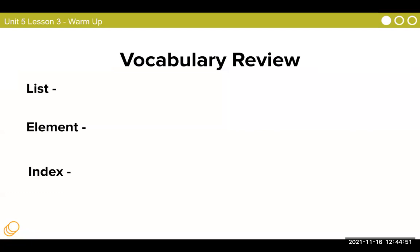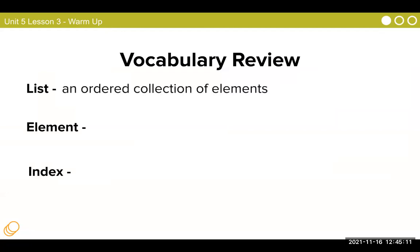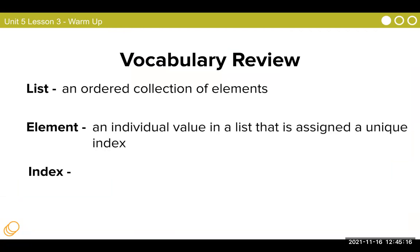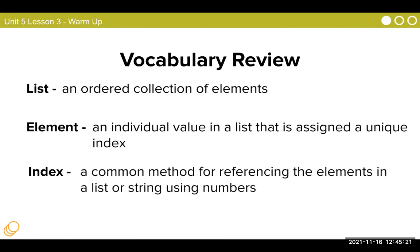Vocab Review. What is a list? What is an element? What is an index? A list is an ordered collection of elements. An element is an individual value in a list that is assigned a unique index. And an index is a common method for referencing the elements in a list or string using numbers.